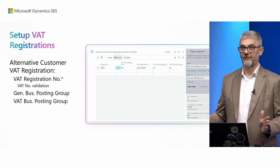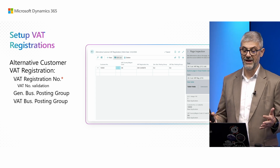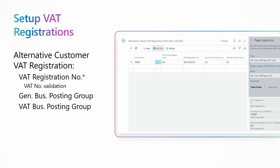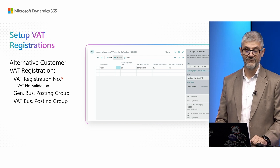Just to see how it looks before the demo — this is how the alternative customer VAT registration page looks. You must enter a VAT registration number, and there is VAT number validation. For example, if you have a Danish VAT number, it must pass the validation for Denmark. Optionally, you can add a general business posting group and a VAT posting group. Now we will move to the demo, and Artur will join us and show how it works.